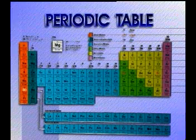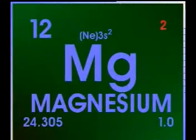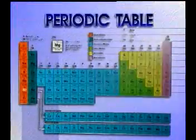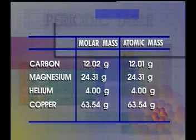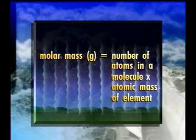The periodic table can help us determine the molar mass of a substance. If the particles of an element are single atoms — like carbon, magnesium, helium, and copper — its molar mass is its atomic mass in grams. Some elements exist as diatomic molecules, or a pair of atoms, such as hydrogen, oxygen, nitrogen, and chlorine. To get molar mass for these, we multiply the number of atoms in a molecule by the atomic mass of the element and express it in grams.